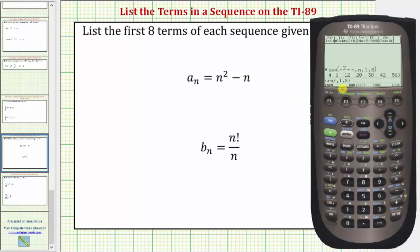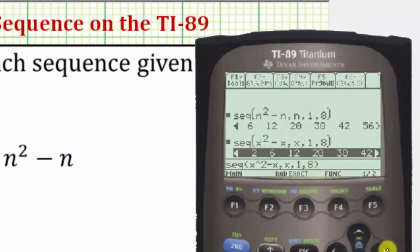And re-enter it using the variable x. Notice that variables x, y, z and t are much easier to enter because they have special buttons. So if we entered x raise the power of two minus x, comma x and we still have comma one, comma eight, close parenthesis, notice how we get the same sequence.